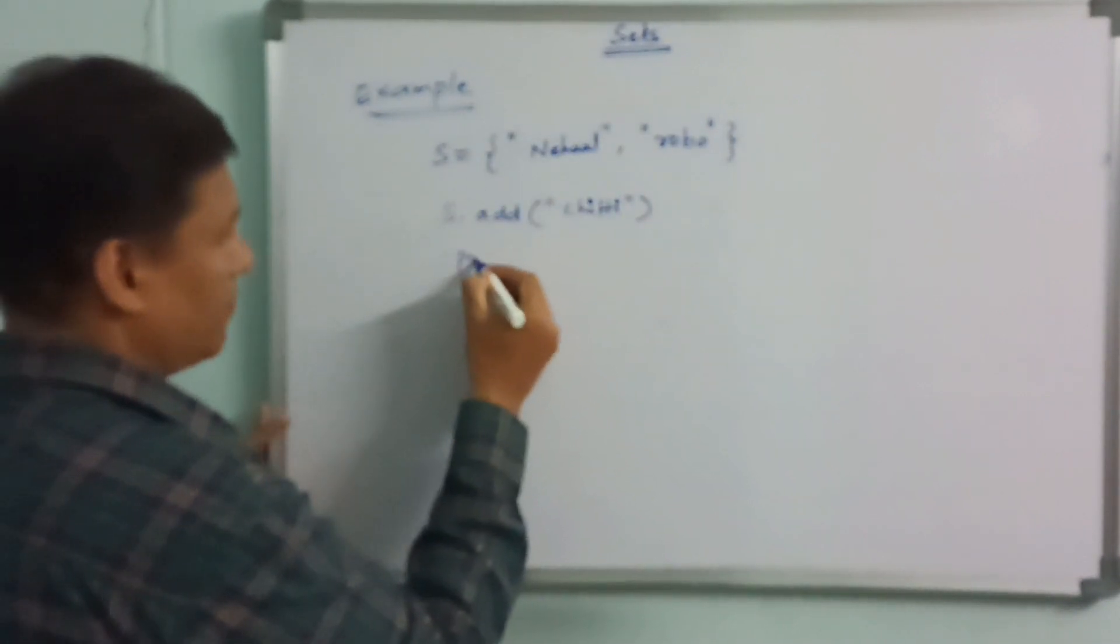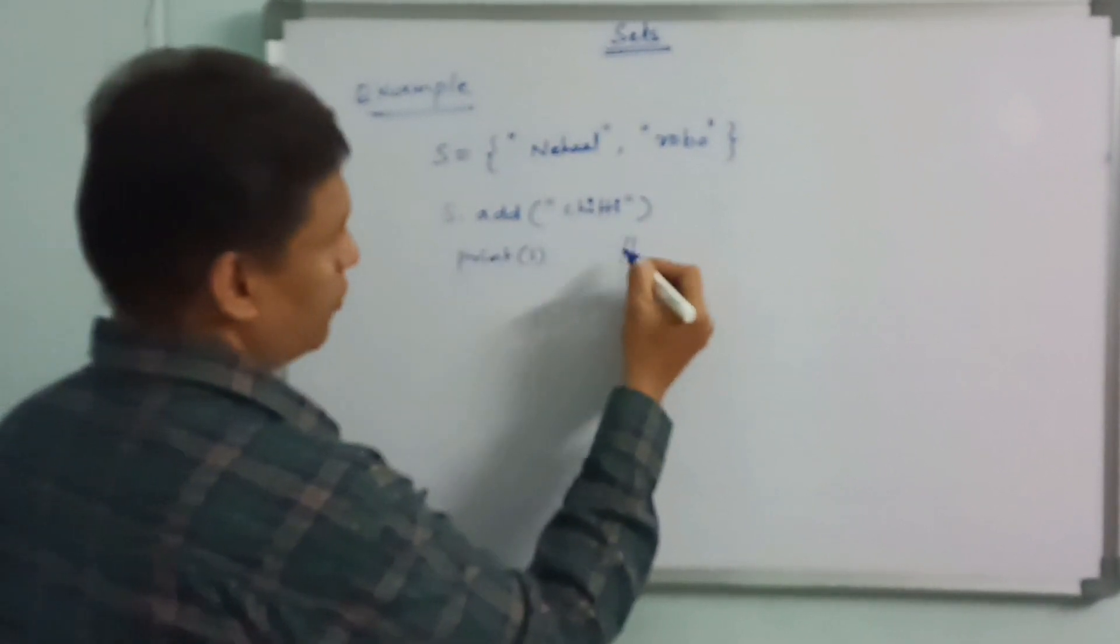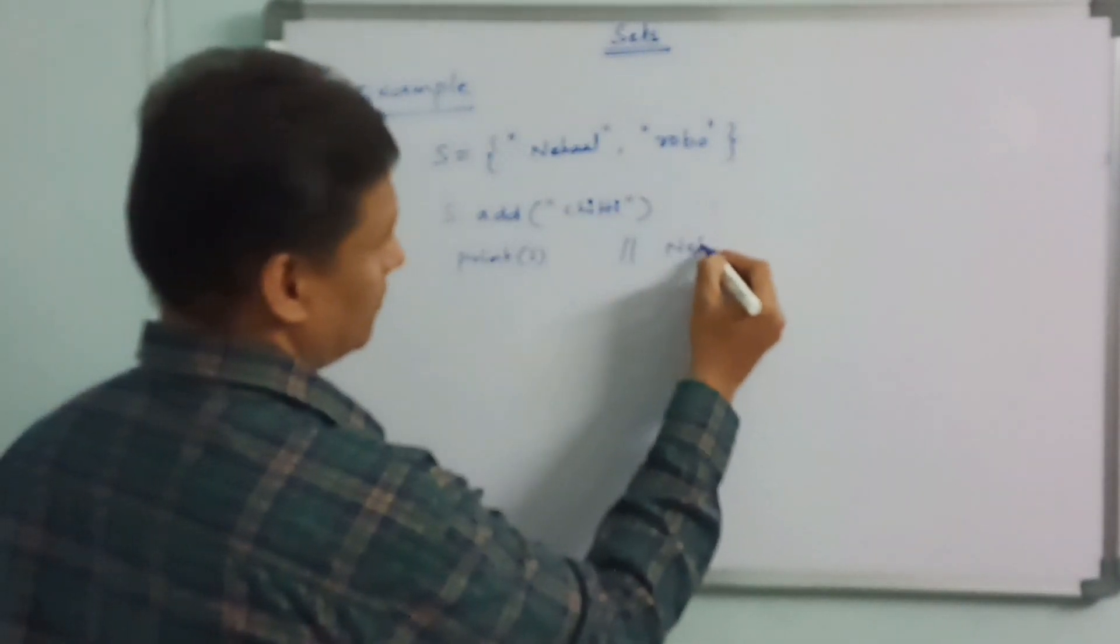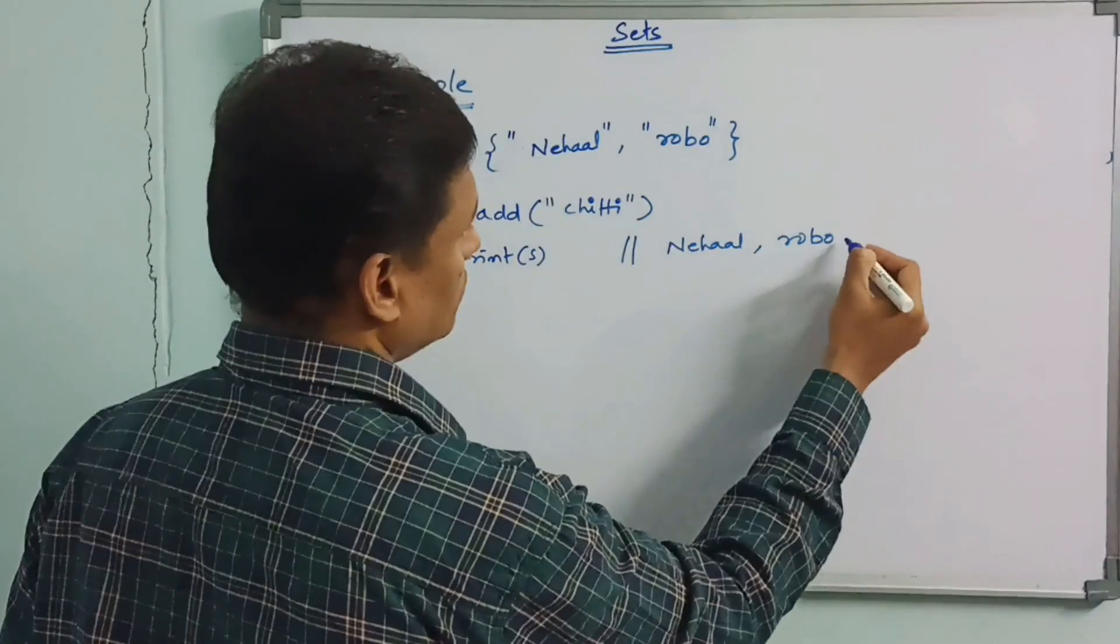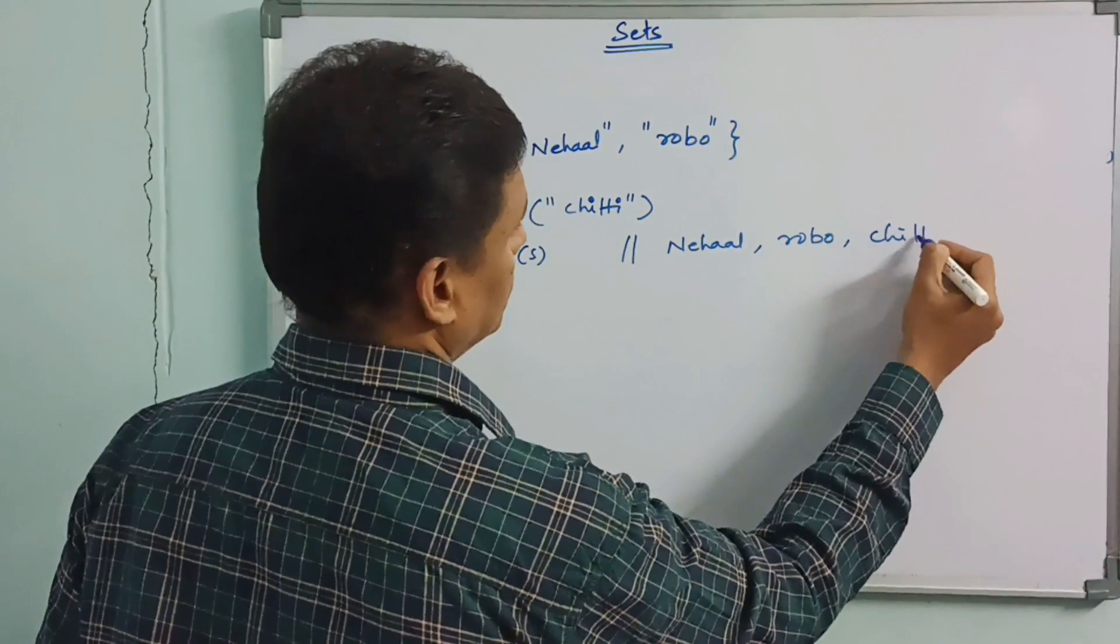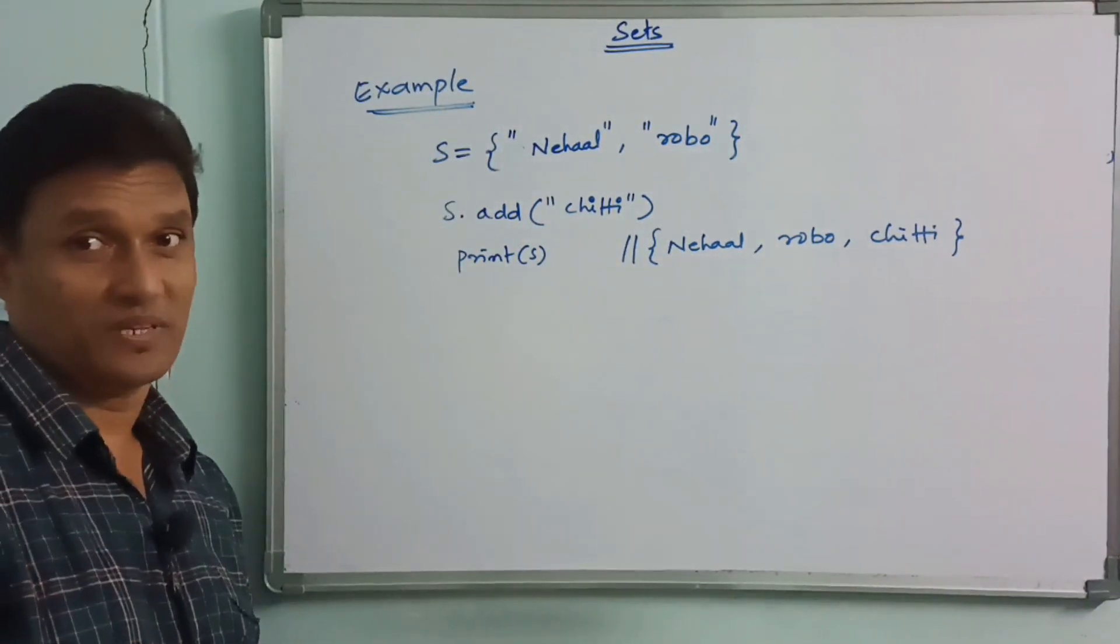Print s.add, we can use output. Nehal, robo, chitti. These three elements are displayed.